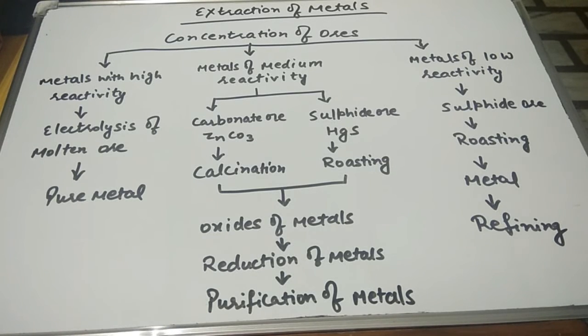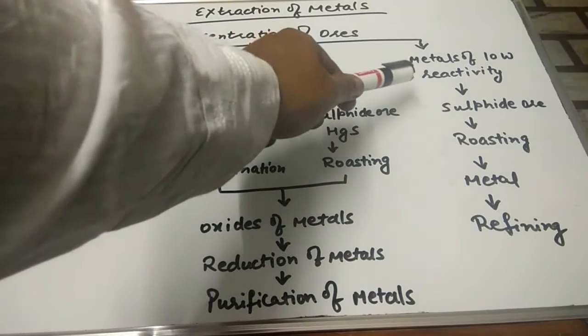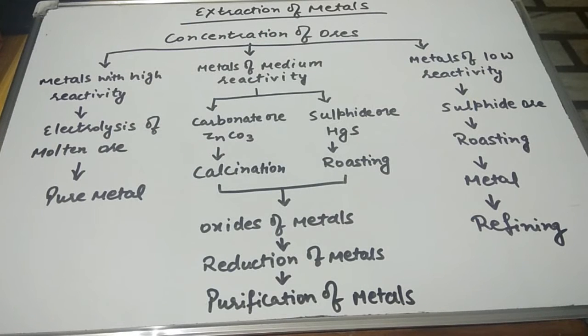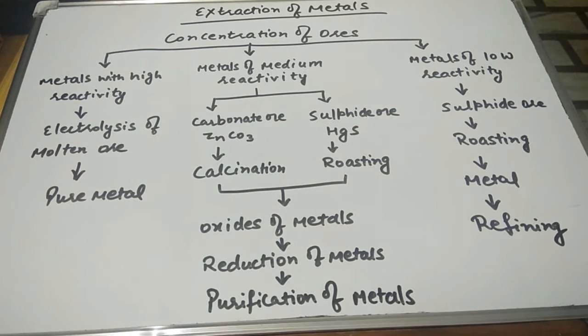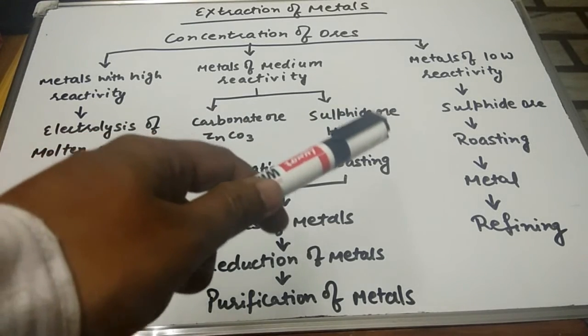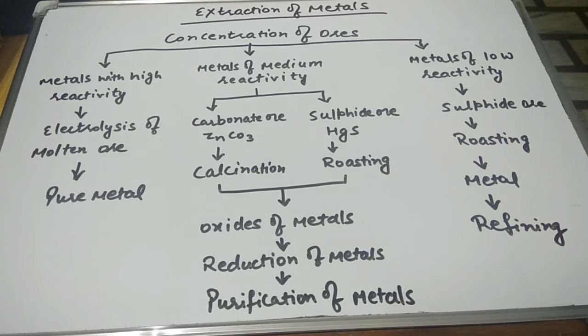Afterwards, in the last step, we will get purification of metals. Now at the third stage, the metals of lower activity occur. They are generally in the sulphide ores. As you already know, sulphide ores are extracted with the help of roasting. So roasting will be there and we will get the metal, and after refining, the metal will be ready for our daily routine uses.